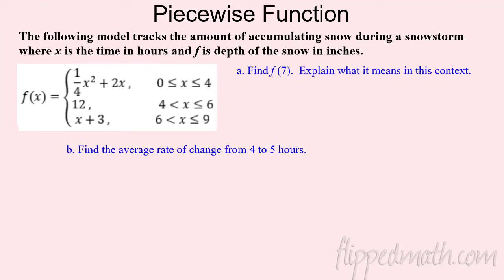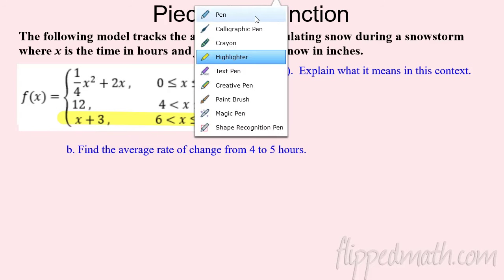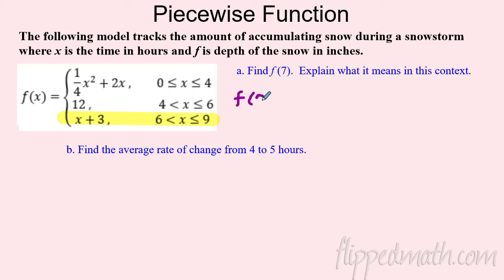Let's wrap up with piecewise functions — now we're looking at them algebraically. The situation: a big snowstorm where x is hours after snow started and f is the depth in inches. The first piece (0 ≤ x ≤ 4) is quadratic, meaning it's snowing quickly. Hours four through six it's constant at 12 — it stopped snowing. Then from hour six to nine it picks up again but linearly — not as fast. Let's find f(7).